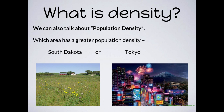So at this point the concept should make a lot of sense. Consider population density — something you talked about in 10th grade. Which area has a greater population density: South Dakota or Tokyo? Well, Tokyo. There are more people packed in per square mile. There are fewer people in South Dakota. South Dakota is less dense than Tokyo.